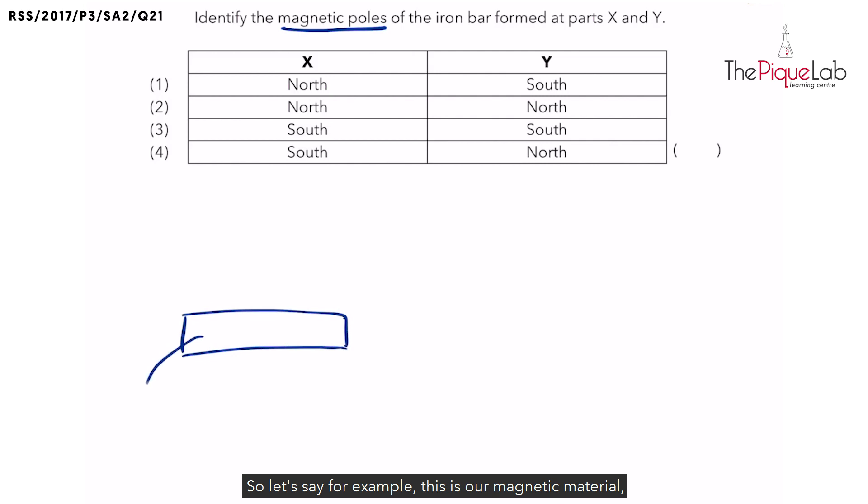So let's say for example, this is our magnetic material. We need to stroke the magnetic material using a magnet and we need to make sure we use the same pole of a bar magnet, which means if I'm using the North Pole to stroke the magnetic material, I will need to use the North Pole throughout. And we need to stroke it using the same pole of the magnet in only one direction. And we need to stroke it at least 30 times.